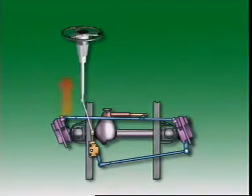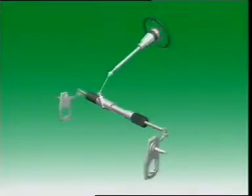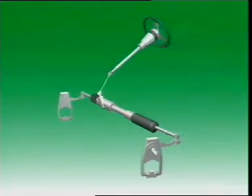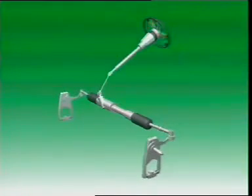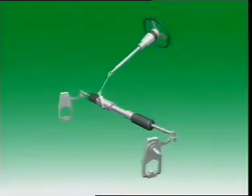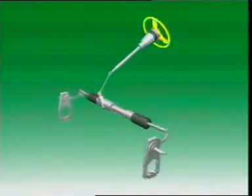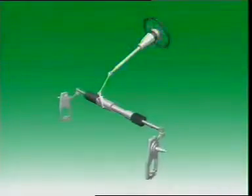With rack and pinion steering, the linkage is simpler since the rack itself is part of the linkage. Movement of the steering wheel is transferred through the steering column, intermediate shaft, and universal joints to rotate the pinion, which moves the rack from side to side.